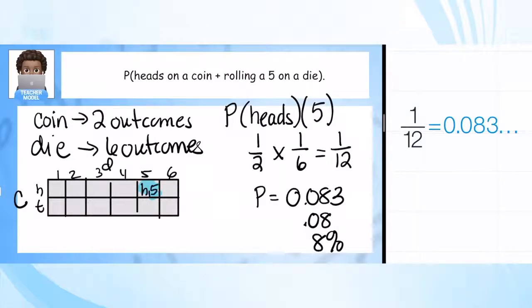We're going to get heads and 5 - all the rest doesn't give us the outcome we want because we want both of those things to happen in this case. So hit pause and jot this down.